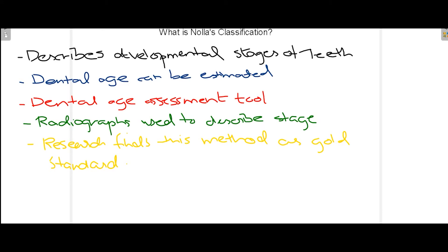Nolla's classification describes the developmental stages associated with teeth, starting with calcification, then formation of the crown, and then finally formation of the root. We use Nolla's classification to describe these different stages, and using mostly radiographs — and also diagrammatically — we can represent this.